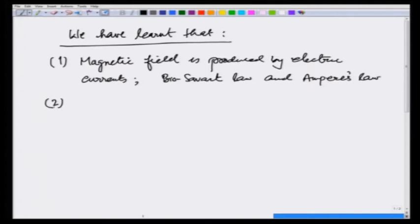Second, we learnt that curl of B is equal to μ₀ j in free space and divergence of B at any point is always zero. Therefore, as a corollary we also learnt that B can be expressed as curl of a vector potential which we kept calculating.